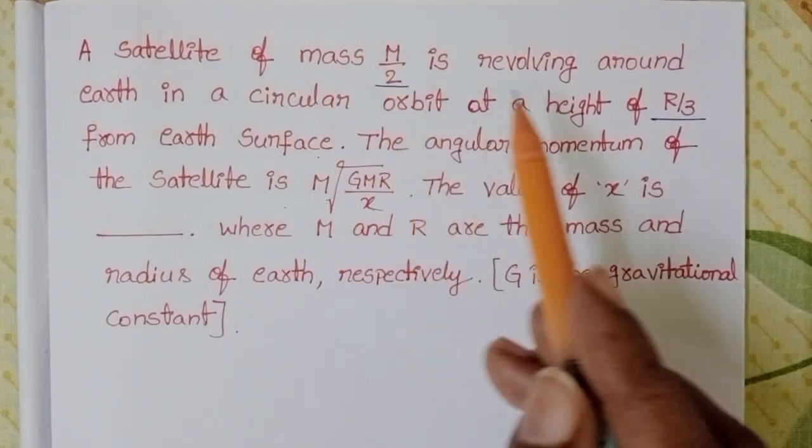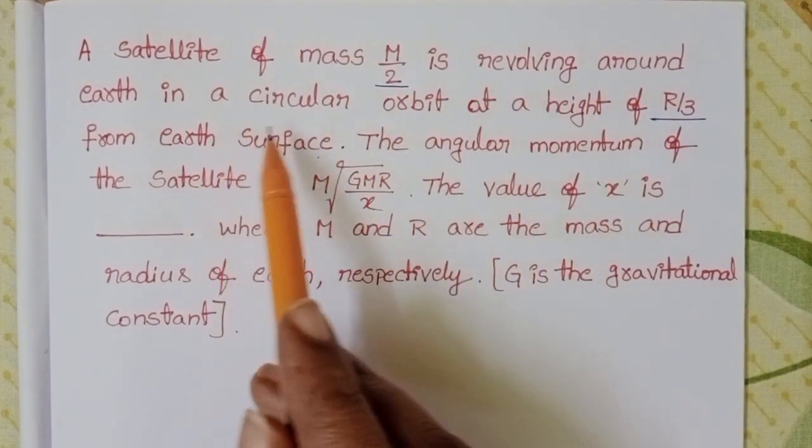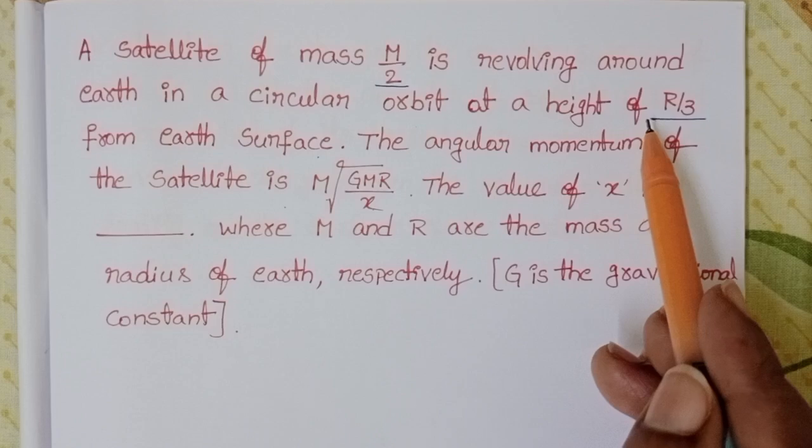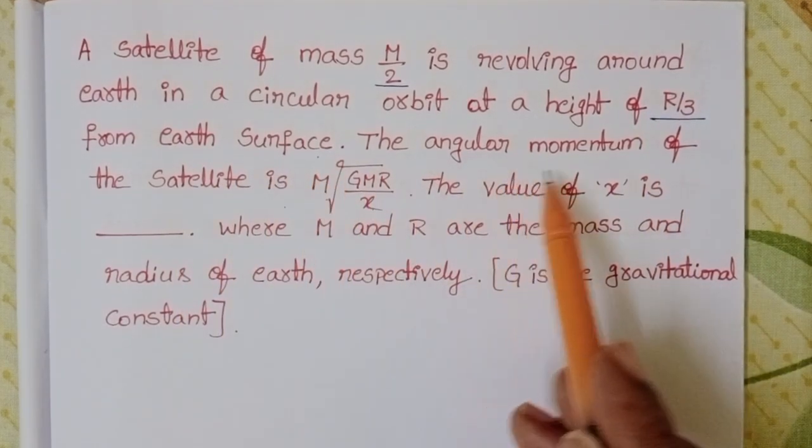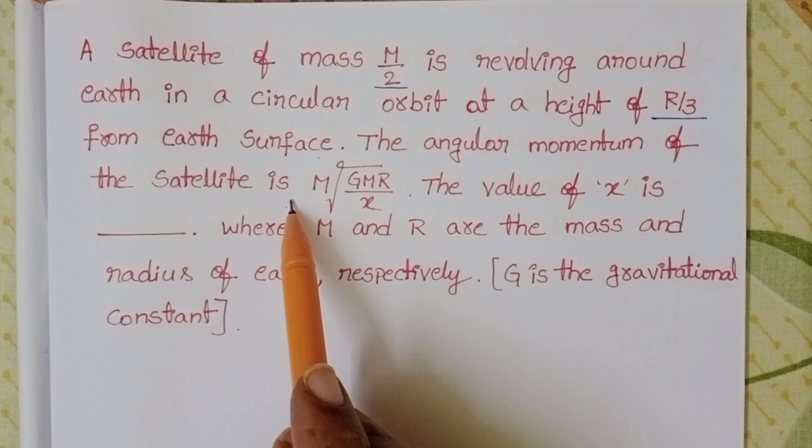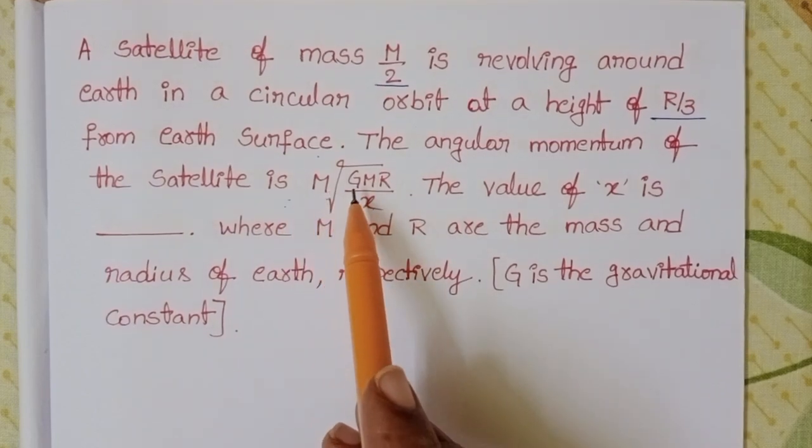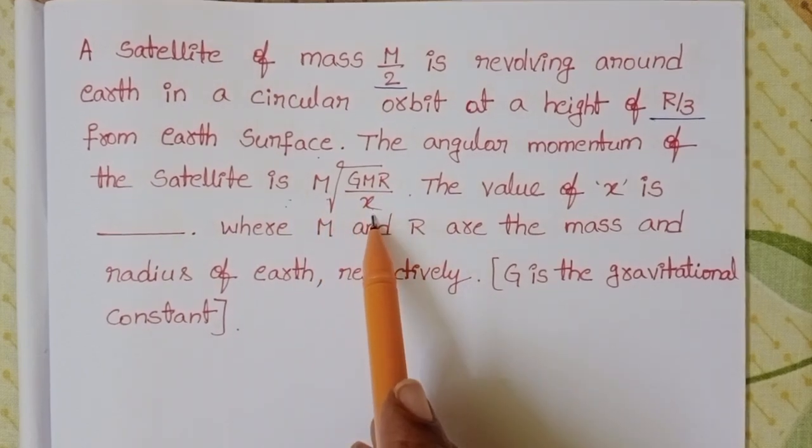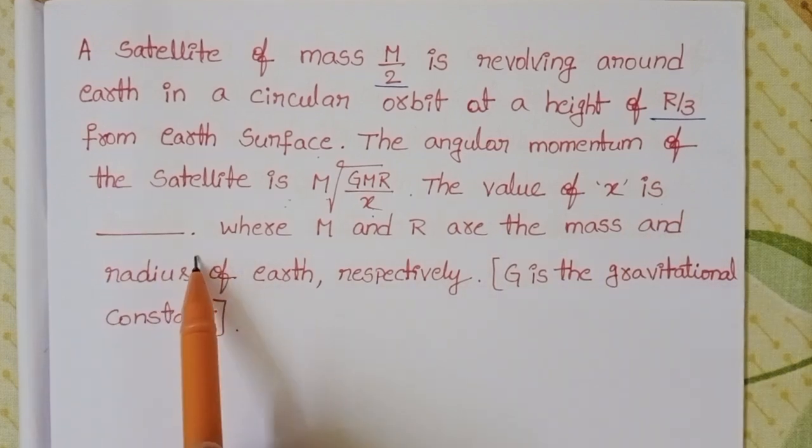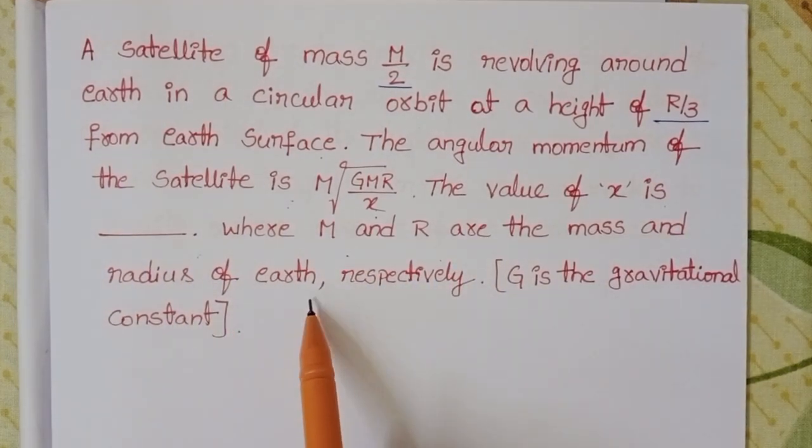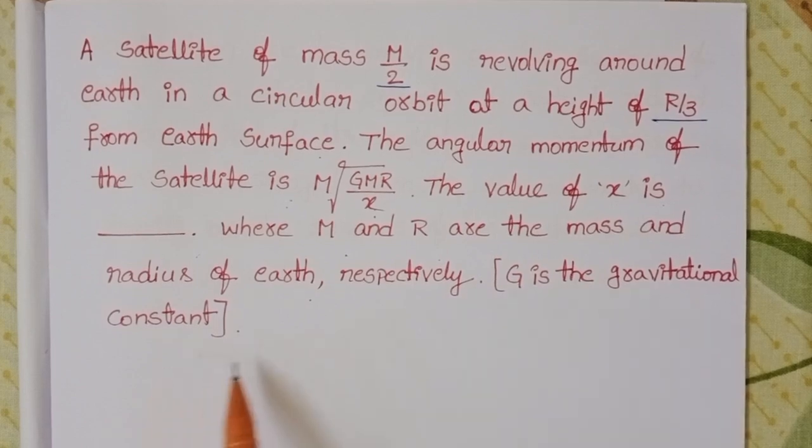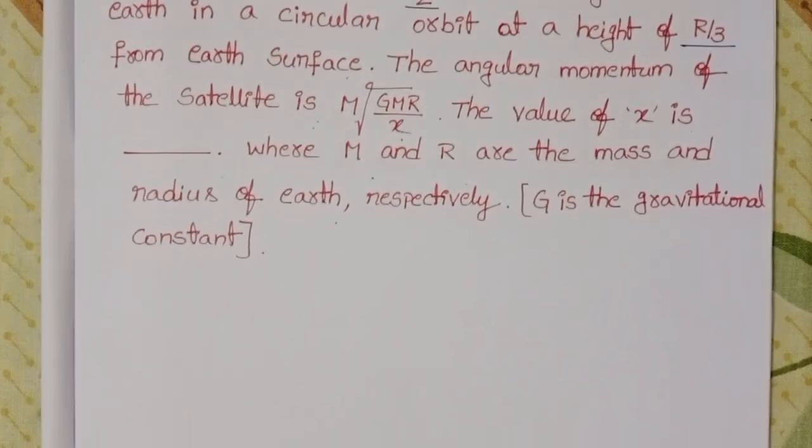A satellite of mass m/2 is revolving around Earth in a circular orbit at a height of r/3 from Earth's surface. The angular momentum of the satellite is m times square root of GMr/x. The value of x is blank, where M and r are the mass and radius of Earth respectively. G is the gravitational constant. In this question, we need to find x.